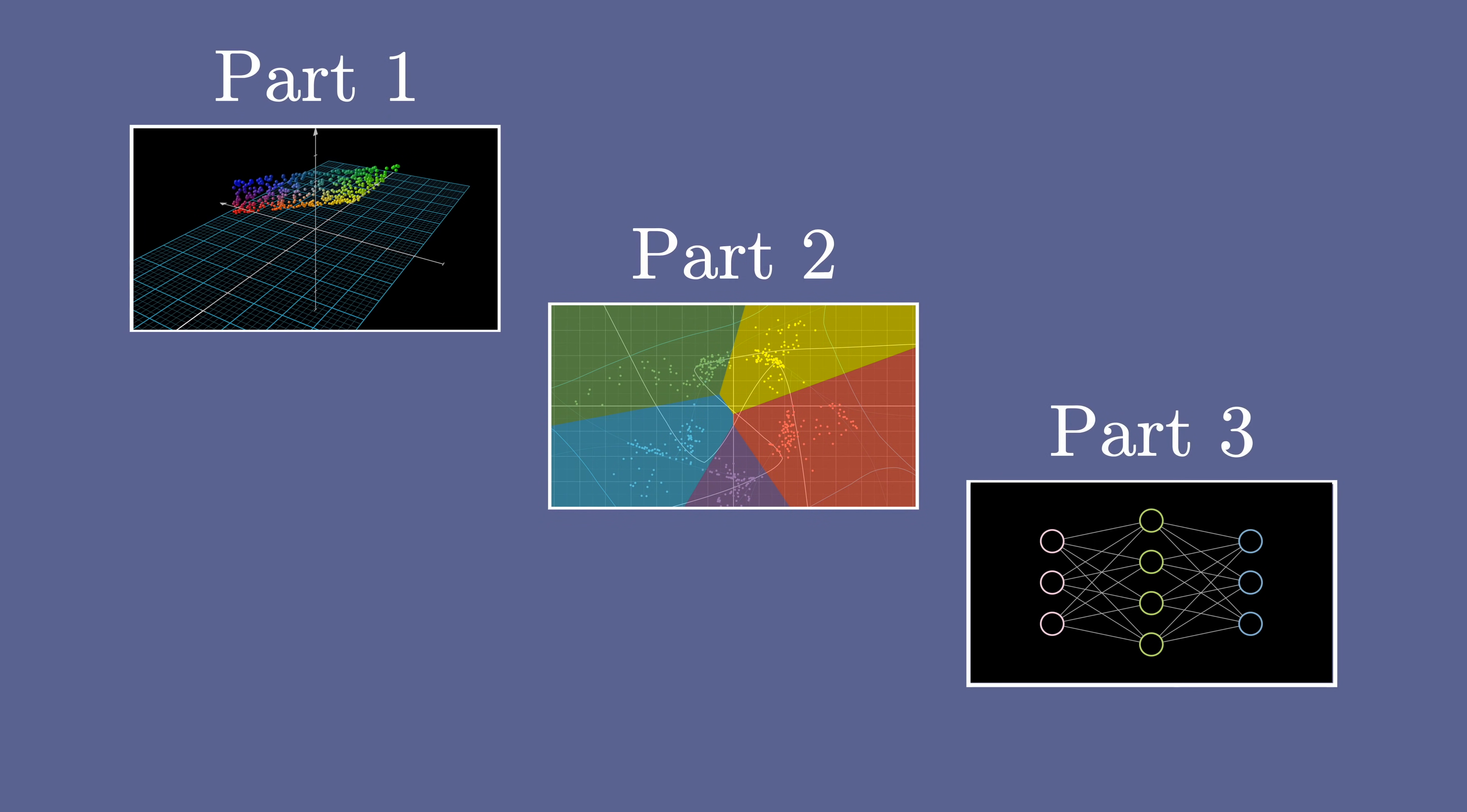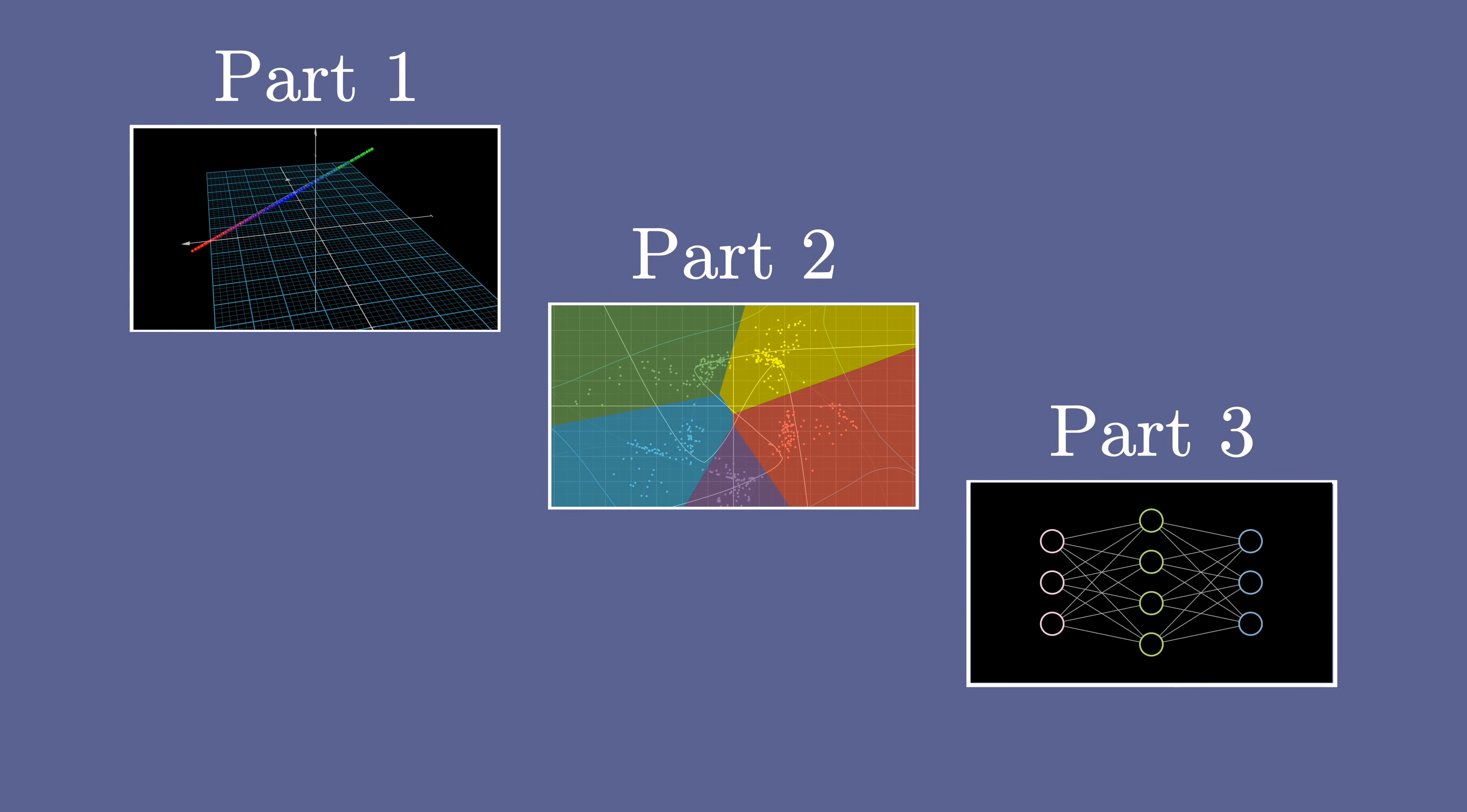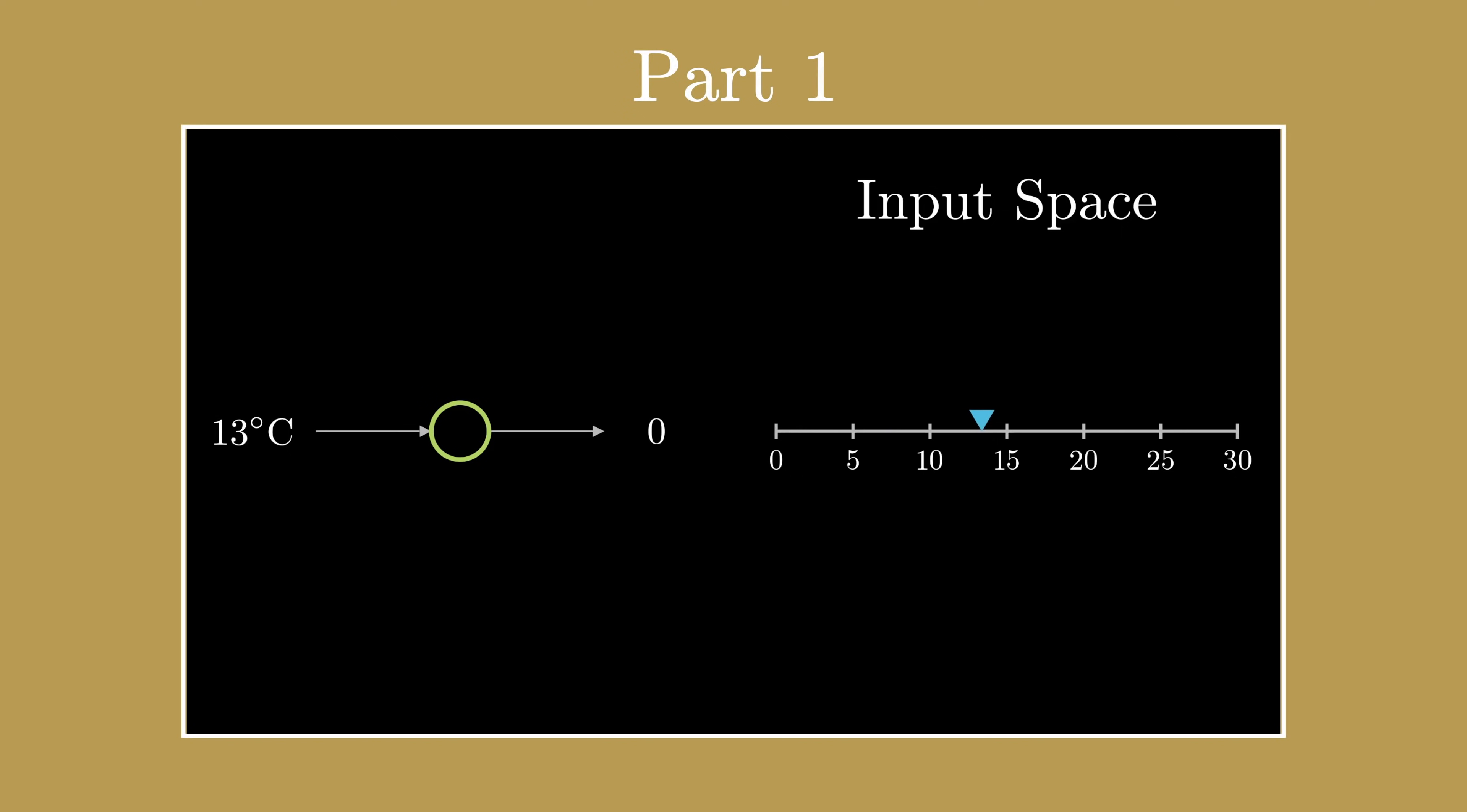Either way, let's do a short recap. In the last video, we explored the idea of an artificial neural network. First, we discussed the idea of a perceptron, a sort of switch that takes in any number of inputs and turns on or off based on these inputs.